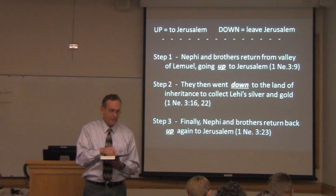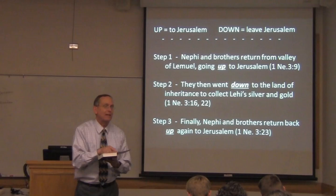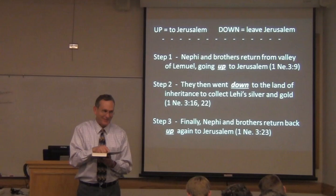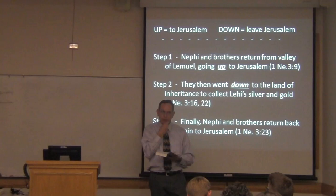Then in verse 17 it tells you the connected logic behind the revelation: 'For he knew that Jerusalem must be destroyed.' There's your motive, if you're like a detective. Lehi knew through revelation that Jerusalem must be destroyed, and that anything left in Jerusalem is not safe. So he hides his stuff somewhere else.